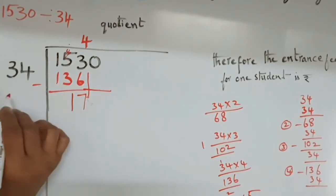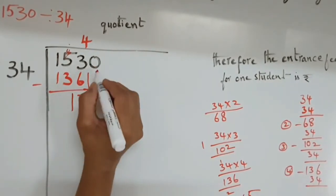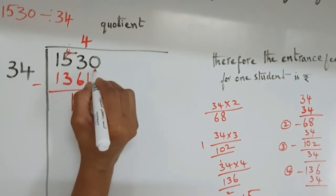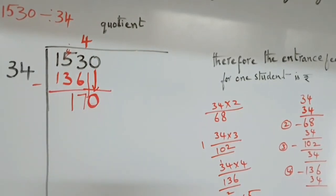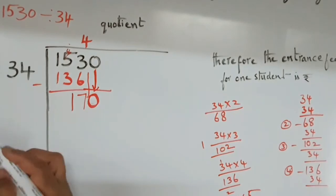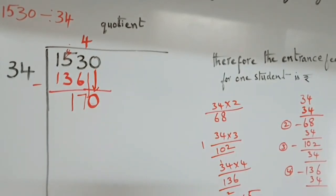Then, 17. Is it possible? No possible. Our next digit is 0. What we have to do? That should be bring it down. 170. Now, we have to see. How many 34s in 170.